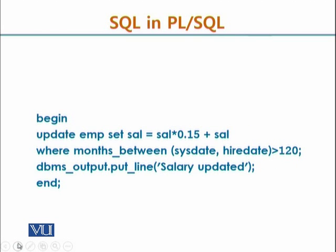Coming back to the solution — it is very simple, with no DECLARE section. This is another variation. We write BEGIN, then UPDATE EMP SET SAL = SAL + SAL * 0.15, which adds 15% to the current salary. The check is that employees should have been working with us for at least 10 years, which equals 120 months. We use MONTHS_BETWEEN(SYSDATE, hire_date) and check if the difference is greater than or equal to 120.